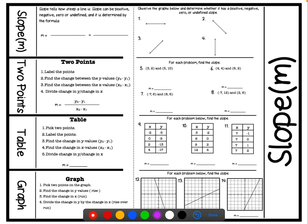Today, or really yesterday, we talked about how to find the slope given two points, a table, and a graph. Remember that a slope tells you how steep a line is. The slope can be positive, negative, zero, or undefined, and it is determined by the formula y2 minus y1 over x2 minus x1. We also call this change in y over change in x.